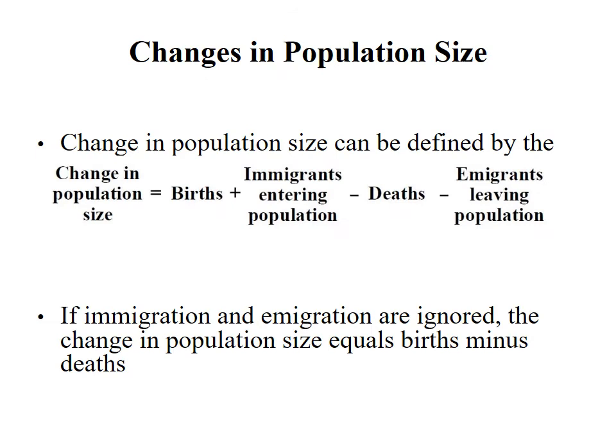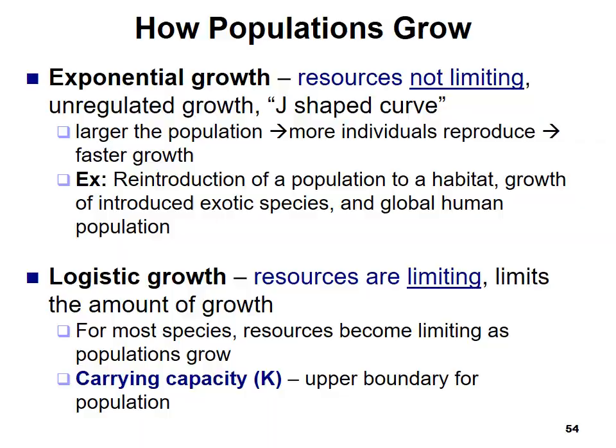To calculate change in population size, look at the number of births and immigrants entering the population minus deaths and organisms leaving. If we ignore immigration and emigration, change in population size equals births minus deaths. Populations can grow with exponential growth — when resources are not limiting, we see unregulated growth and a J-shaped curve. The larger the population, the more individuals reproducing, so growth accelerates.